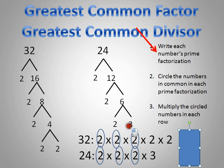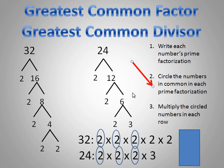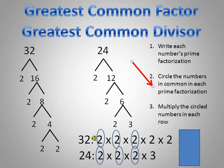Next, circle the numbers in common in each prime factorization. The thirty-two factorization is on top and the twenty-four factorization is on the bottom. I match a two on top with a two on the bottom and circle them, then another pair, then another pair. I don't circle the extra two in thirty-two because there's no matching two left in twenty-four, and I can't circle the three because there's no three in thirty-two to match with.